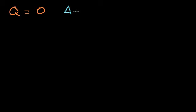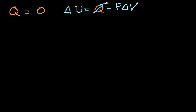Going back to the first law of thermodynamics: the change in internal energy equals the heat applied to the system minus the work done by the system. The work done is pressure times change in volume, for a quasi-static process. Since it's adiabatic, heat is 0, so we can add P·ΔV to both sides and get: ΔU + P·ΔV = 0.